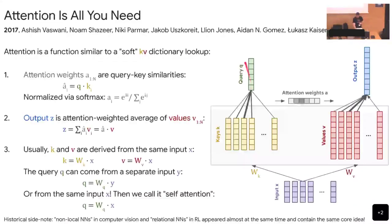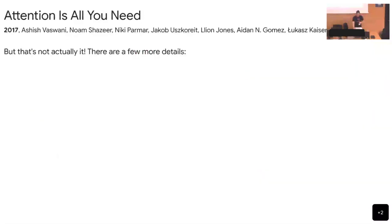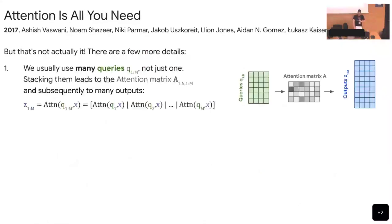How attention combines queries, keys, and values into outputs should now be clear. In practice, there is not just one query but usually a whole bunch of queries packed into a matrix for efficiency, giving you an attention matrix — one row per query — and the outputs are also a matrix. Another thing used in practice is multi-head attention.